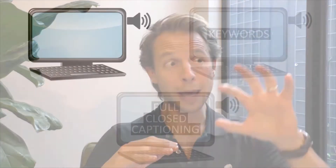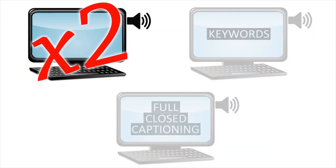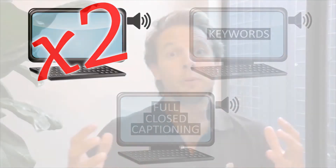But once you move into deep retention, all of a sudden the pure narration group — the one with no text — is almost two times more likely to correctly answer deep questions than either of the groups that had text. There we just demonstrated the redundancy effect: add text and learning starts to go down.